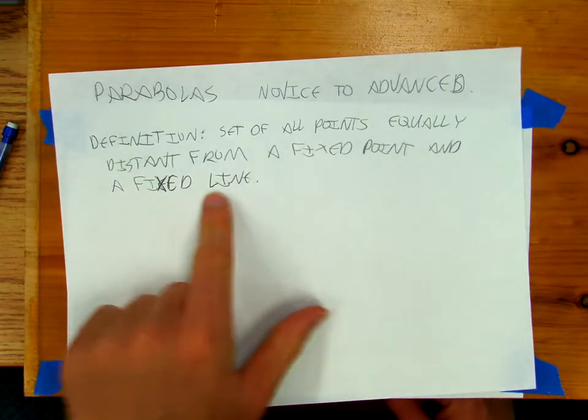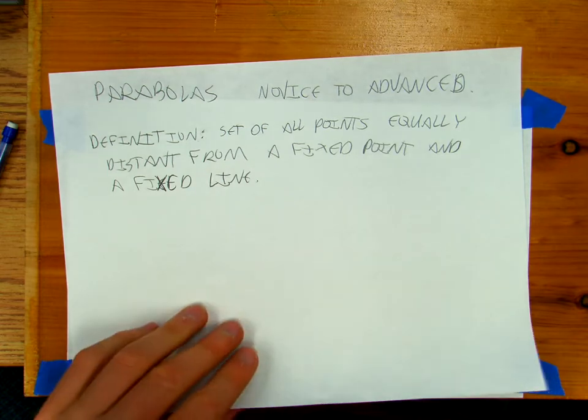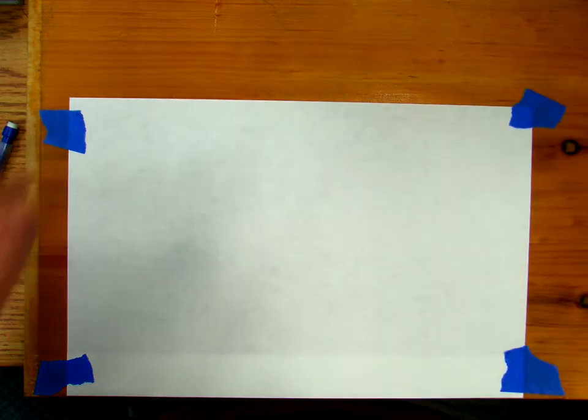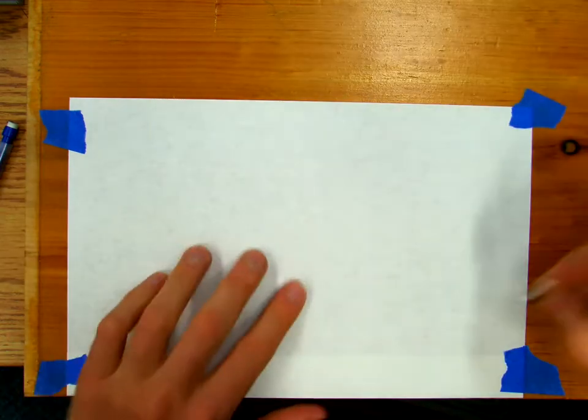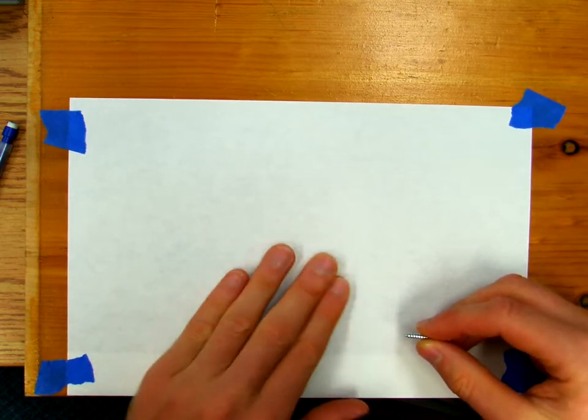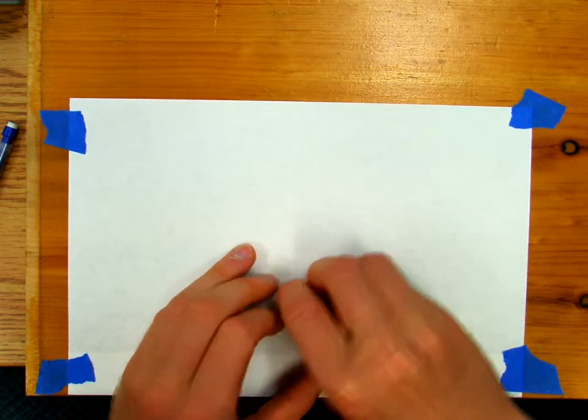Okay, so fixed line. Well, where is my fixed line in this? Well, my fixed line is right here, the edge of the board. Fixed point. Well, how am I going to come up with a fixed point? Well, what I'm going to do is, there's where my hole was.